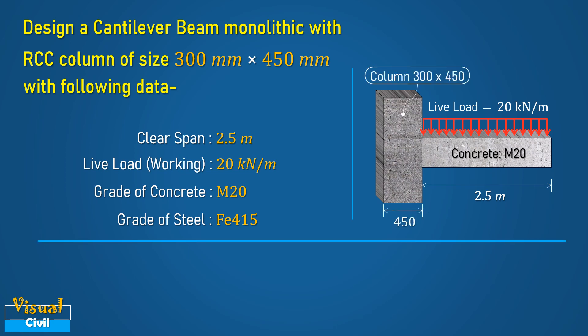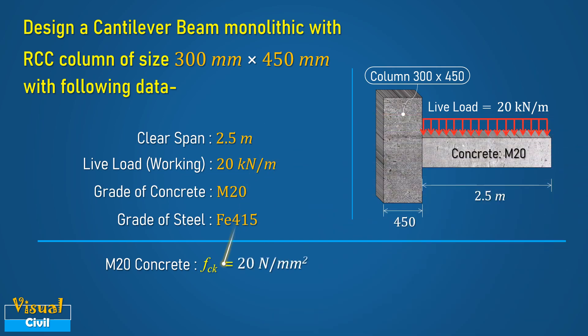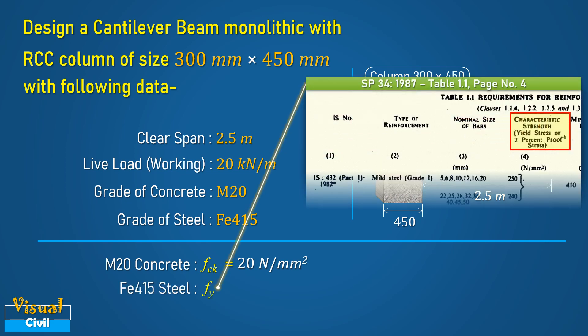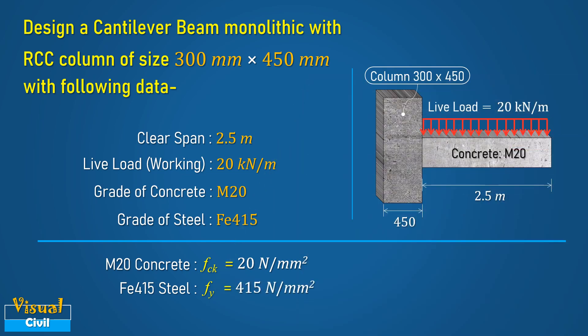Let us start by getting the values of FCK and FY. As per table 2 of IS 456-2000, the value of FCK for M20 grade concrete is 20 N per mm square. The value of FY for Fe415 steel is 415 N per mm square as per SP34 1987 table 1.1.